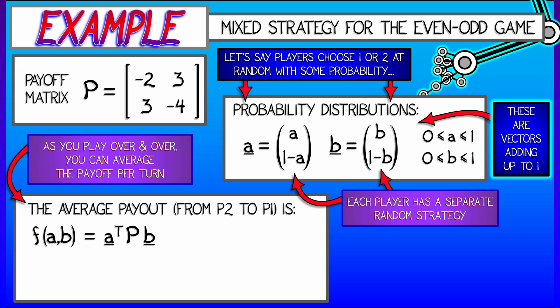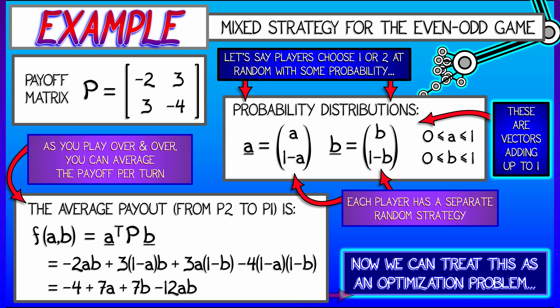When you do so, as we saw, the expected payout is a function of these two parameters, A and B, given by the vector A transpose times P times the vector B. Do the algebra on that, multiply that out, you're going to get negative 2AB plus 3 times 1 minus A times B plus 3 times A times 1 minus B minus 4 times 1 minus A times 1 minus B. You've got to do a little algebra there, multiply, simplify. You get negative 4 plus 7A plus 7B minus 12AB.